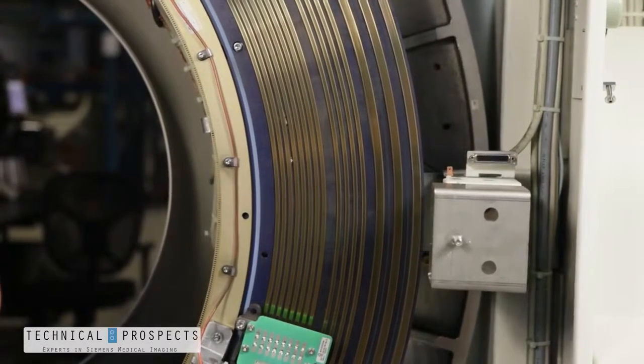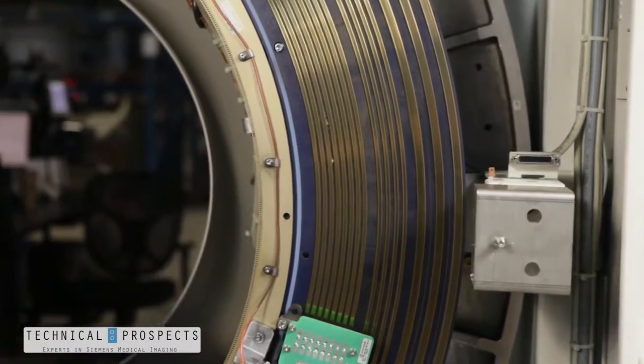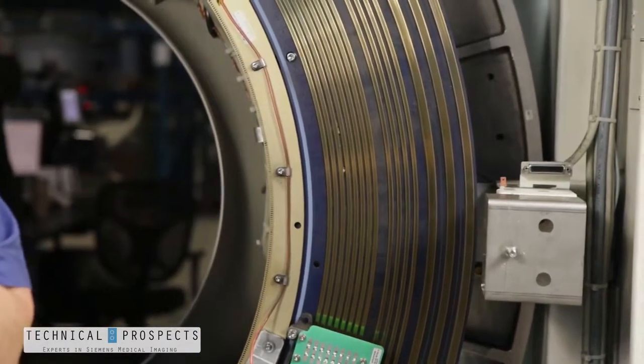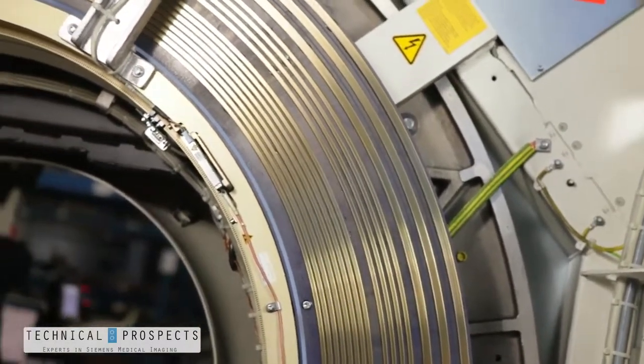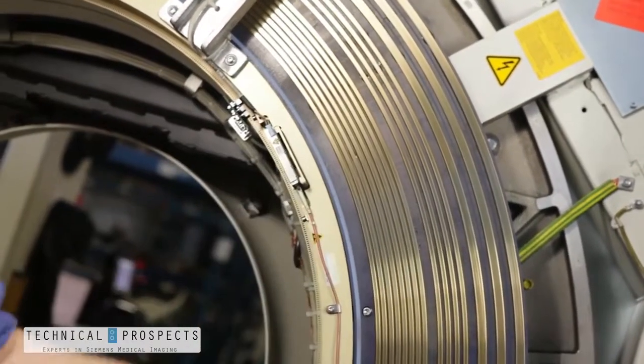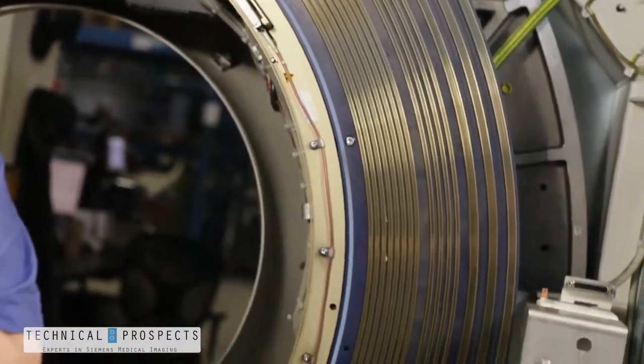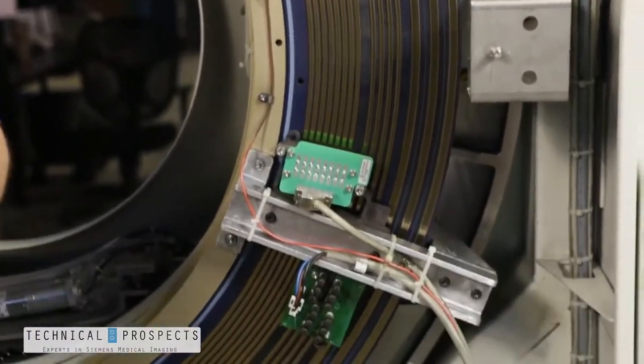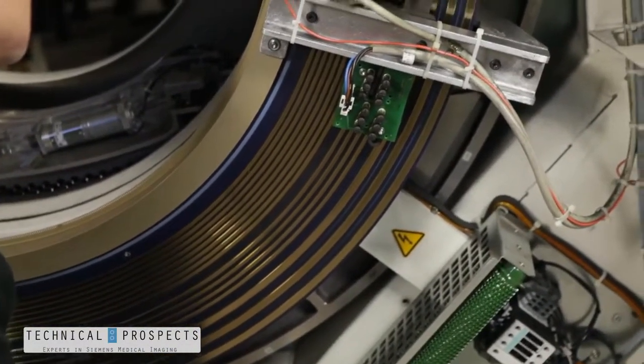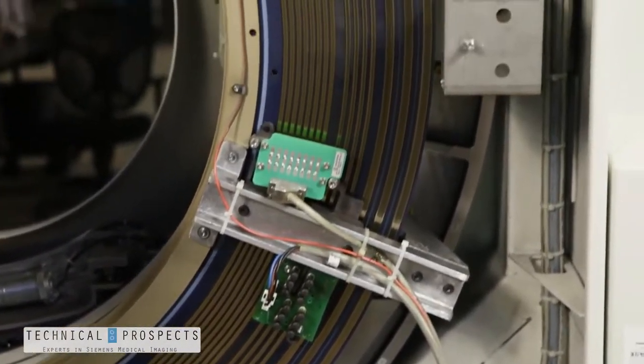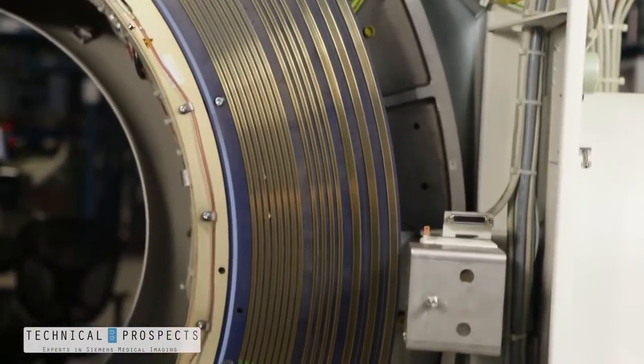You would first vacuum the slip ring with your HEPA vac. Second, you would apply liberal amounts of denatured alcohol to a lint-free cleaning rag and use a broad sweeping motion to polish the ring in a circular fashion. Remember that if you're working from the back side of the gantry, you rotate the gantry in a counterclockwise rotation if necessary so that you continue the rotation of the system in the proper direction.